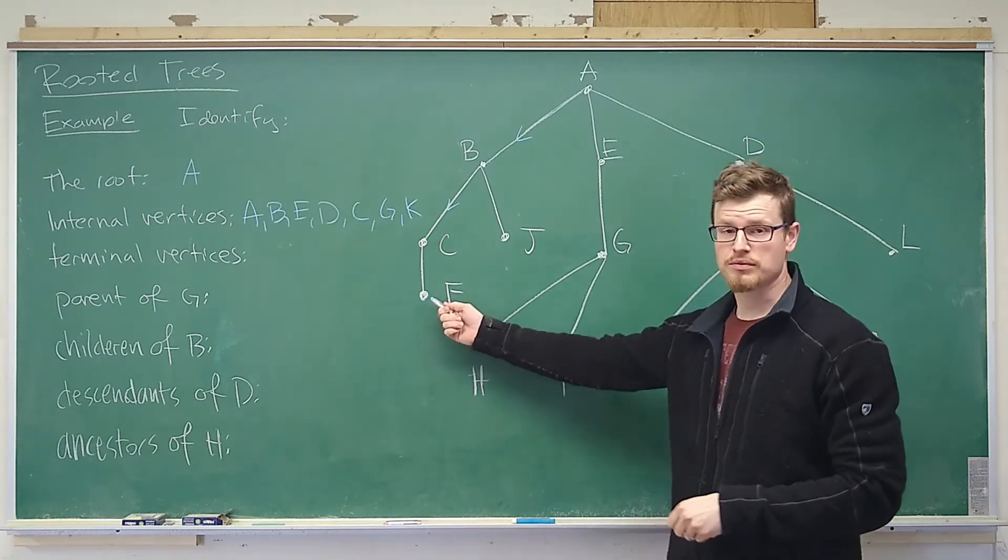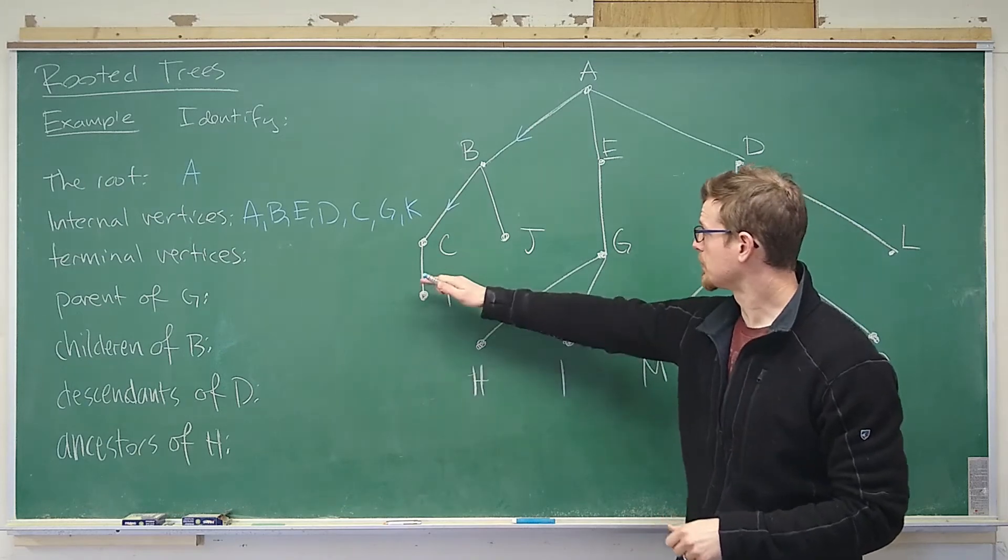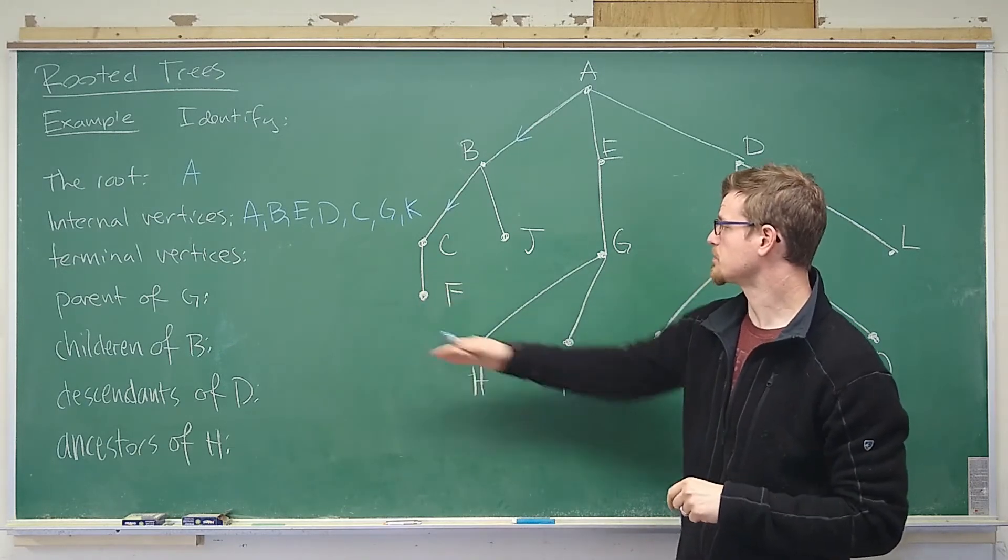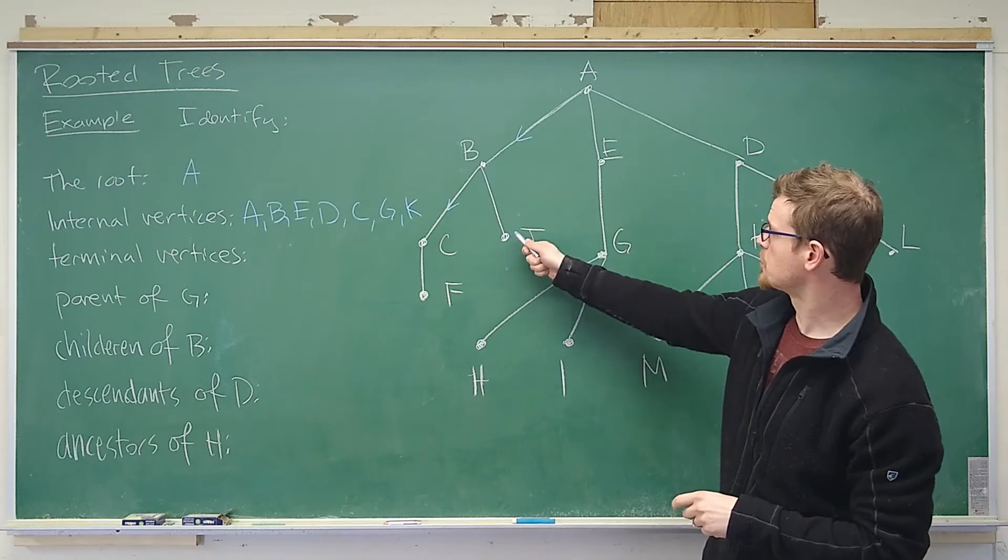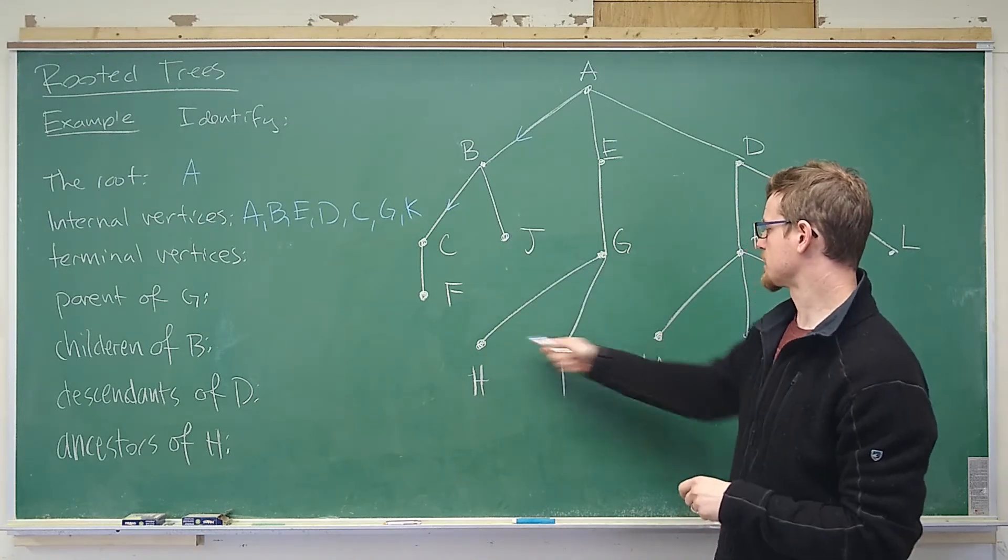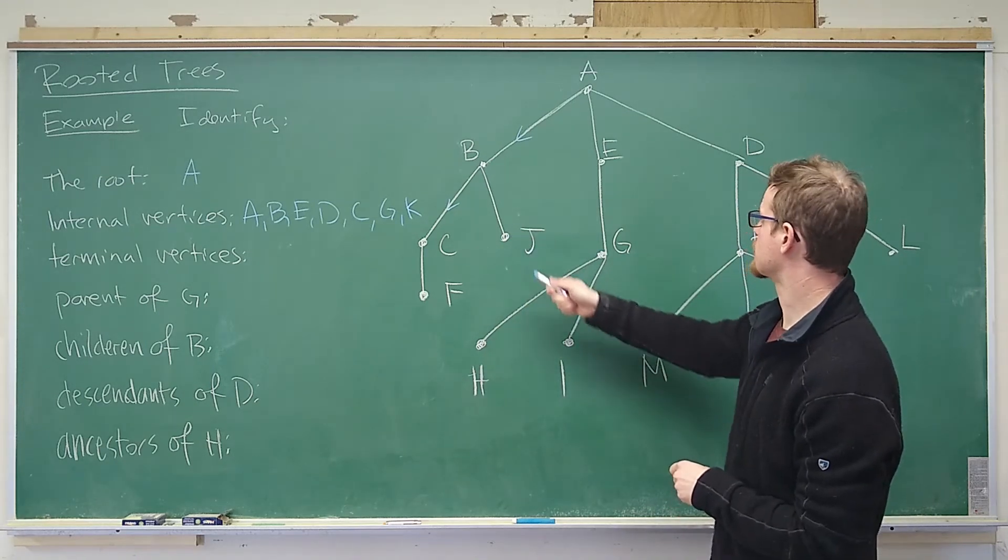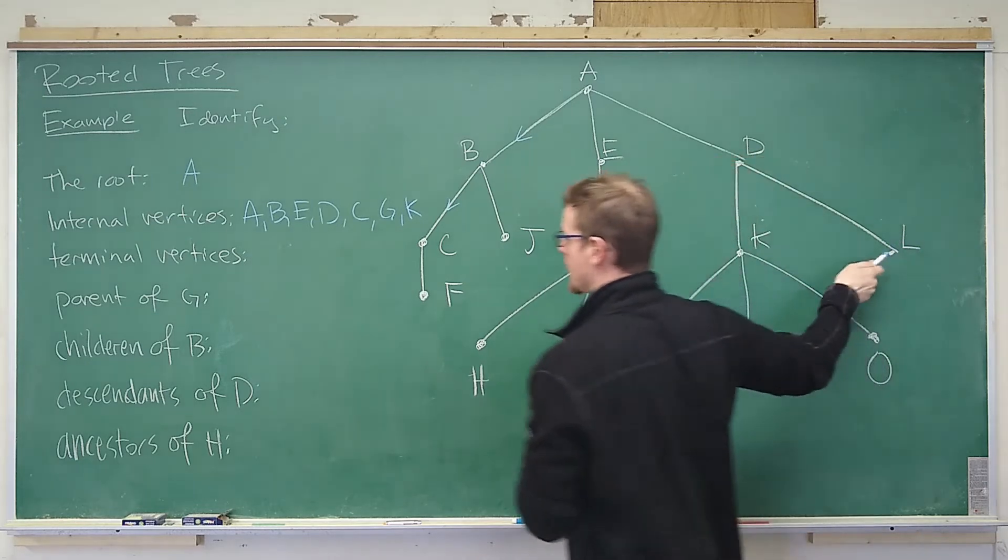For example, f wasn't written all the way down there although as far as generations you might say it's supposed to be down here. But j is definitely not in this same generation and it is terminal as is l.